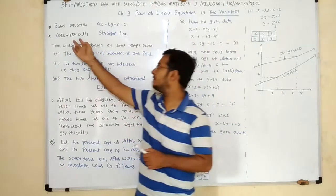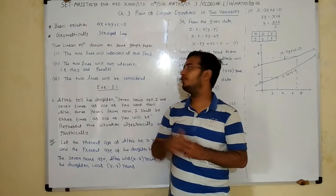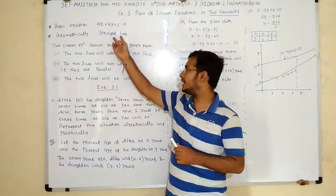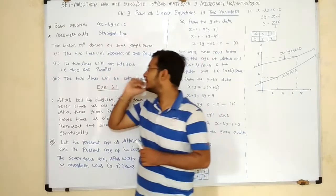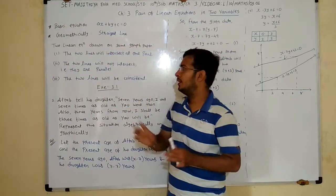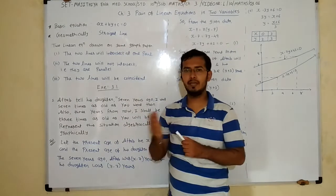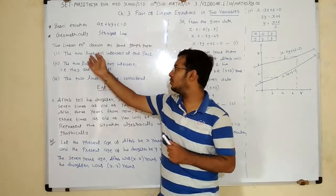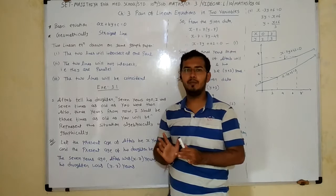Geometrically, if you draw the graph of a linear equation, you always get a straight line. If we draw two linear equations on the same graph paper, there are 3 cases. First, the two lines will intersect at exactly one point.